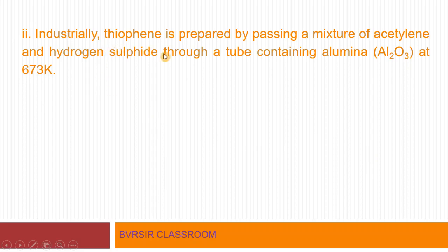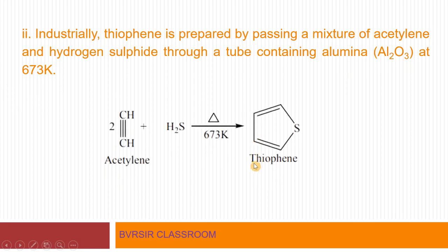On an industrial and large-scale basis, thiophene is prepared by passing a mixture of acetylene (C₂H₂) and hydrogen sulfide (H₂S) through a red-hot tube containing alumina (Al₂O₃) as catalyst at about 673 K. Two molecules of acetylene react with H₂S to give thiophene. This is another method of preparing thiophene.